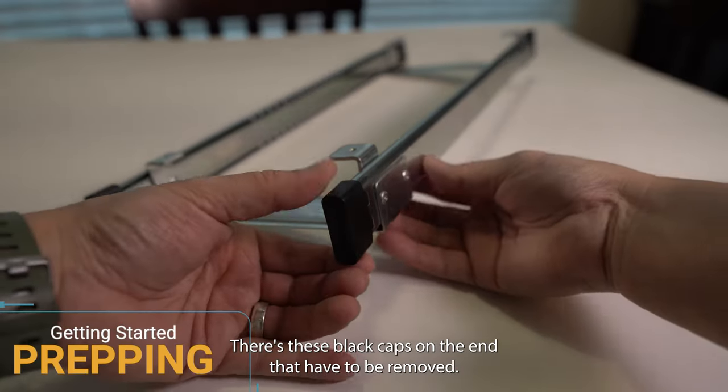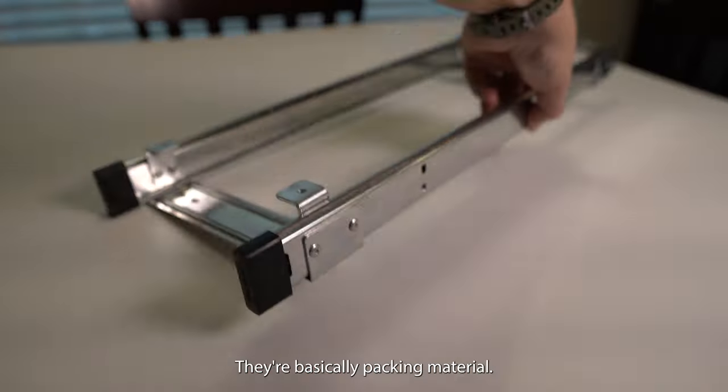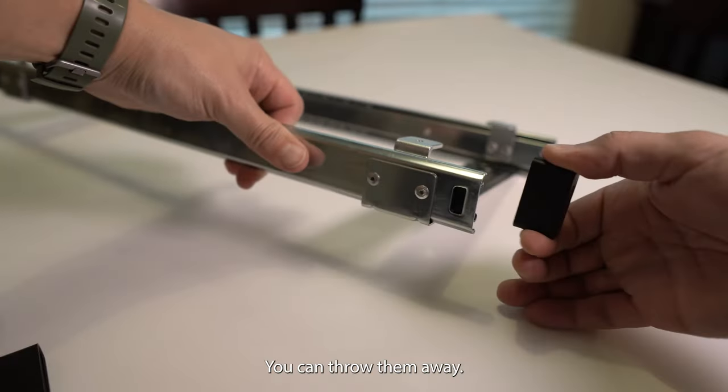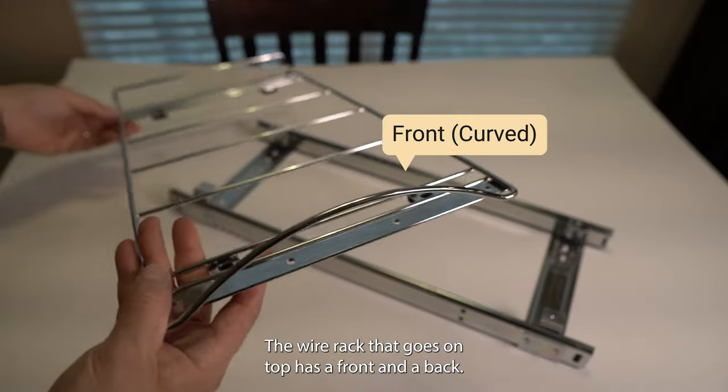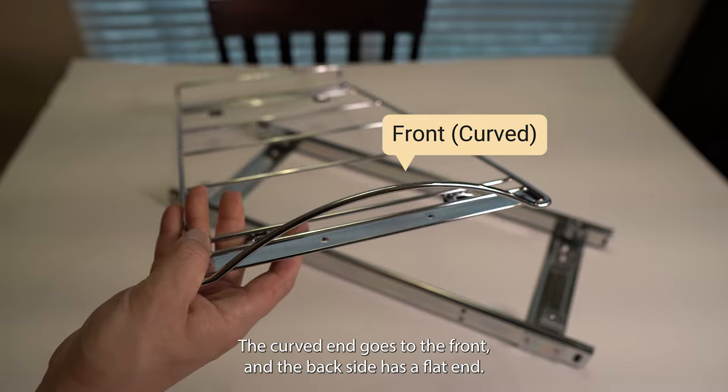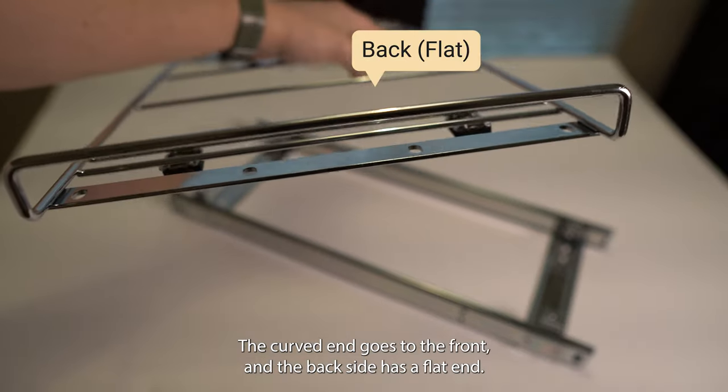Before you get started, there's these black caps on the end that have to be removed. They're basically packing material. You can throw them away. The wire rack that goes on top has a front and a back. The curved end goes to the front, and the back side has a flat end.